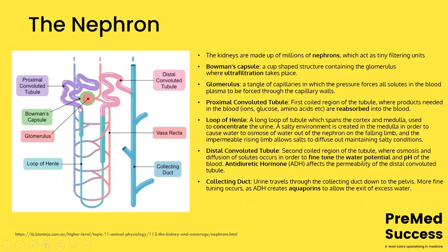This is your nephron — the bread and butter of A-level biology. This is your Bowman's capsule, where all the filtration happens. The glomerulus is a tangle of small capillaries that filters blood. To make it really simple: anything that stays in the nephron by the end will end up in your urine. Anything that leaves the nephron goes back into the blood and normal circulation.